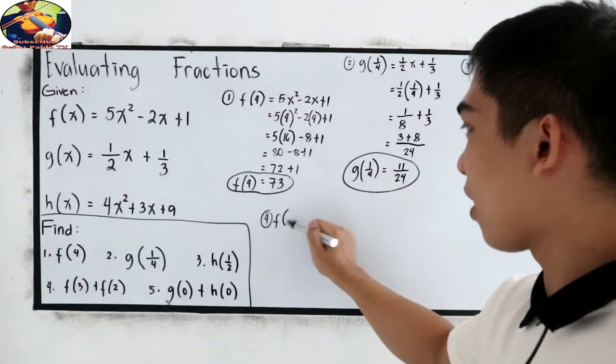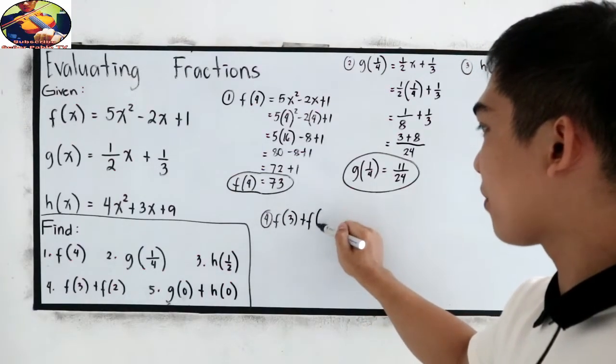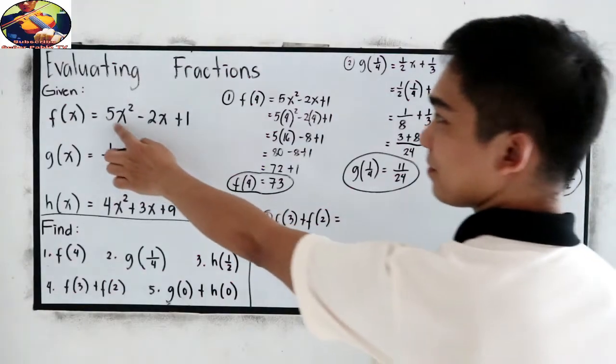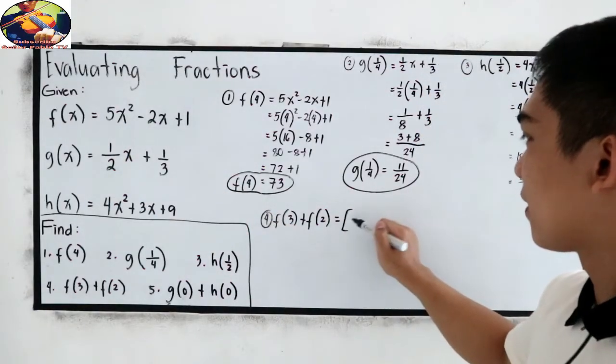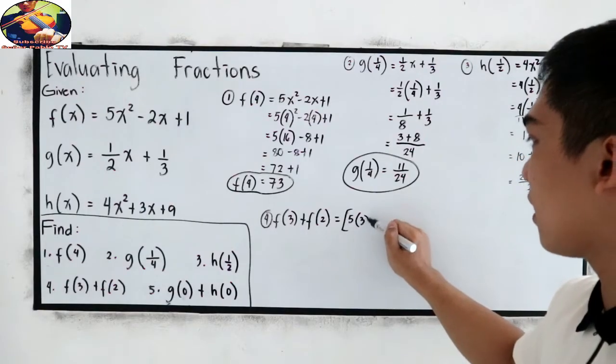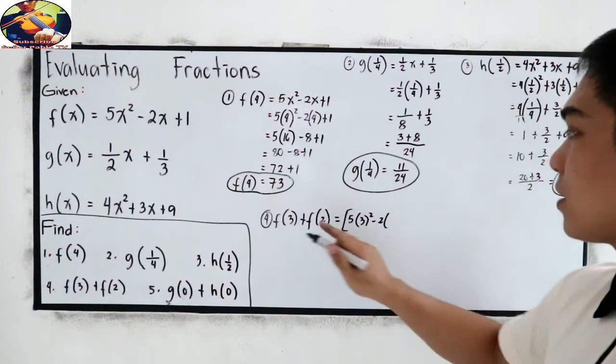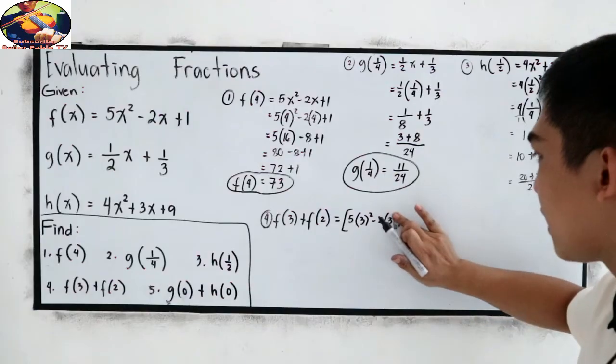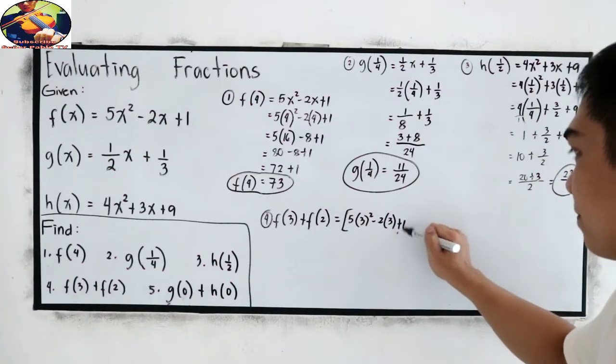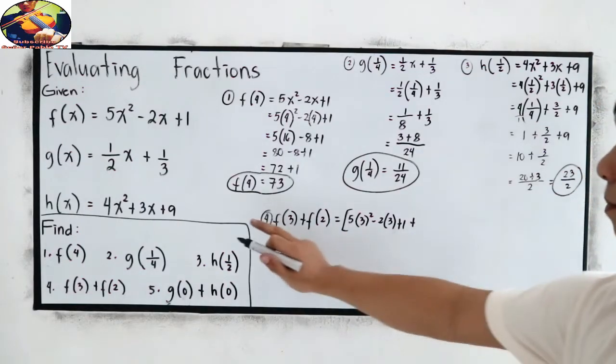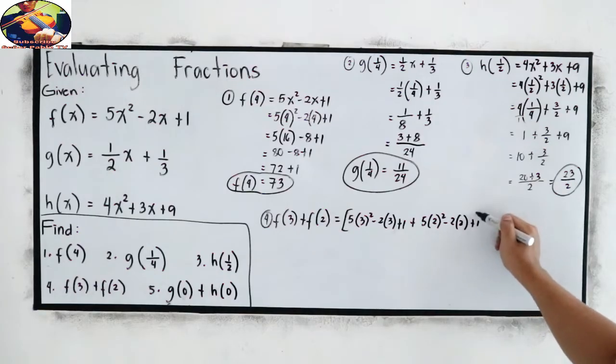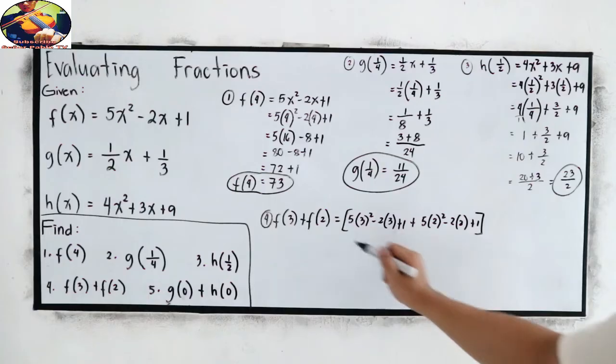So, f of 3 plus f of 2. f of 3 is 5 times 3 squared minus 2 times, our x is 3, so 3 plus 1. Okay? Okay. 1 must be outside our parenthesis. Then, I'm going to add f of 2.